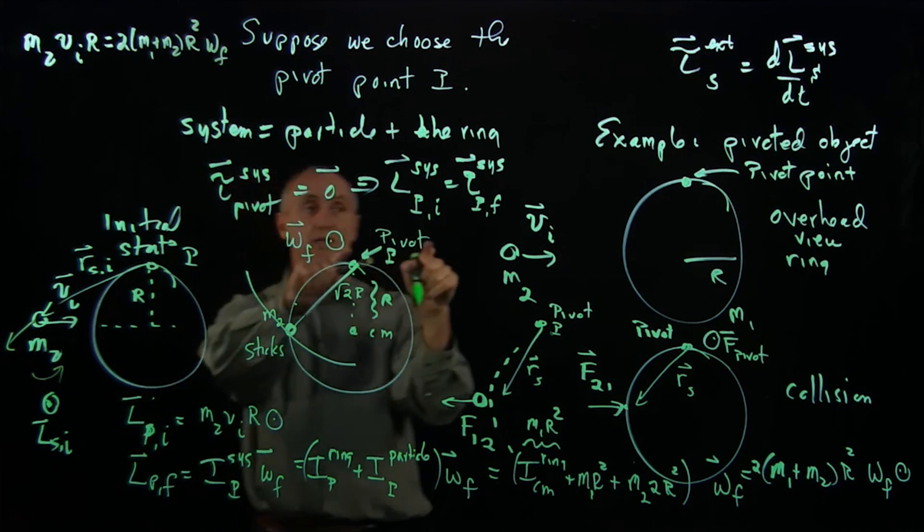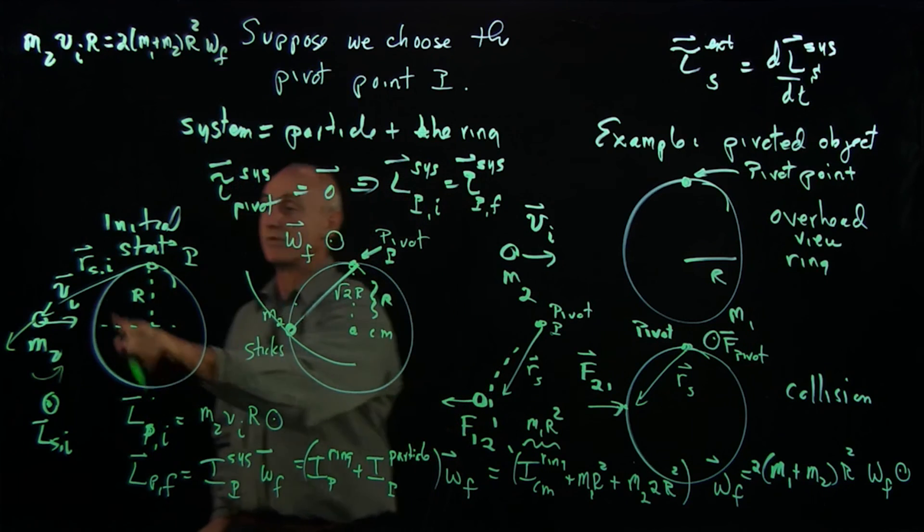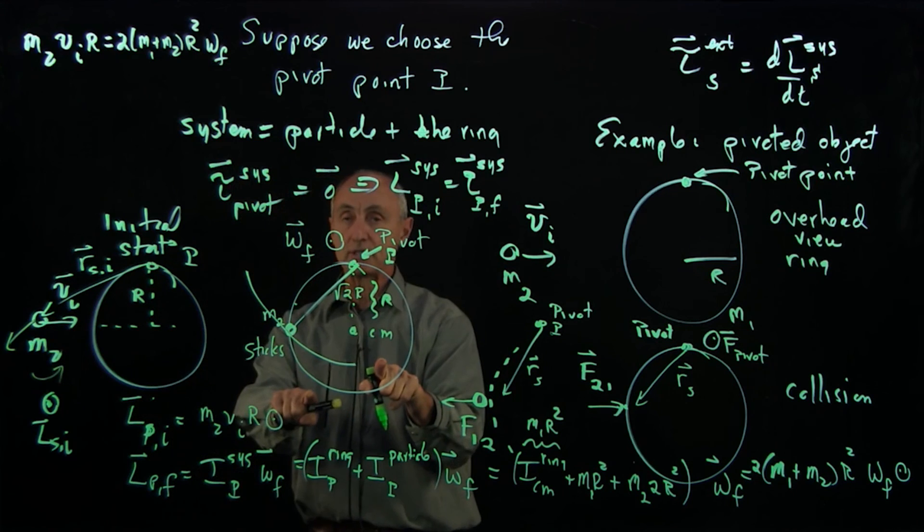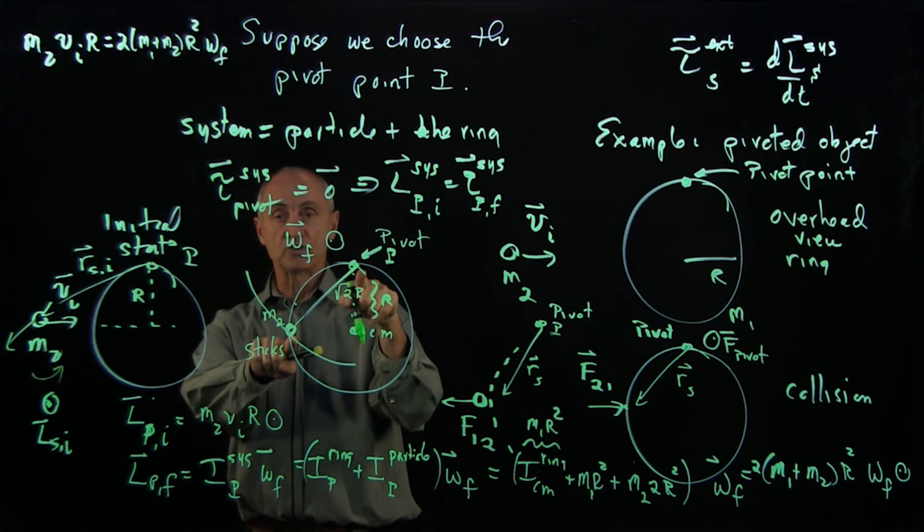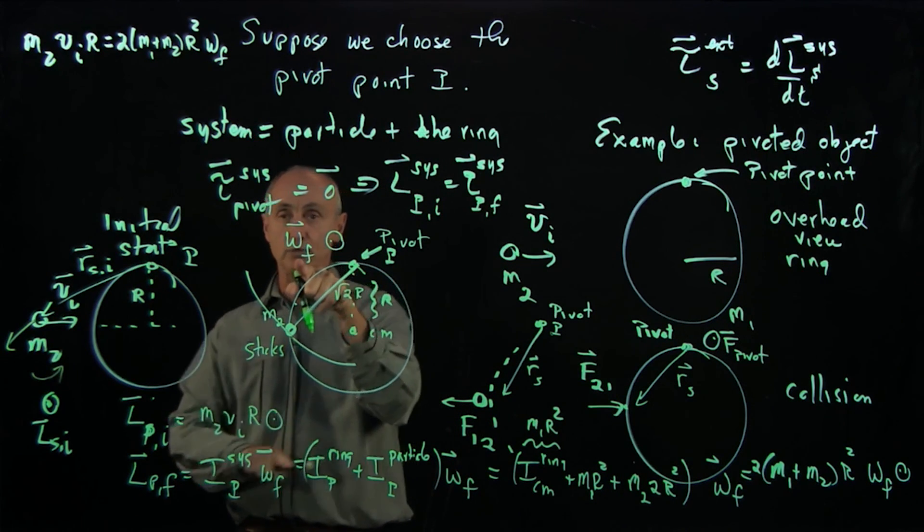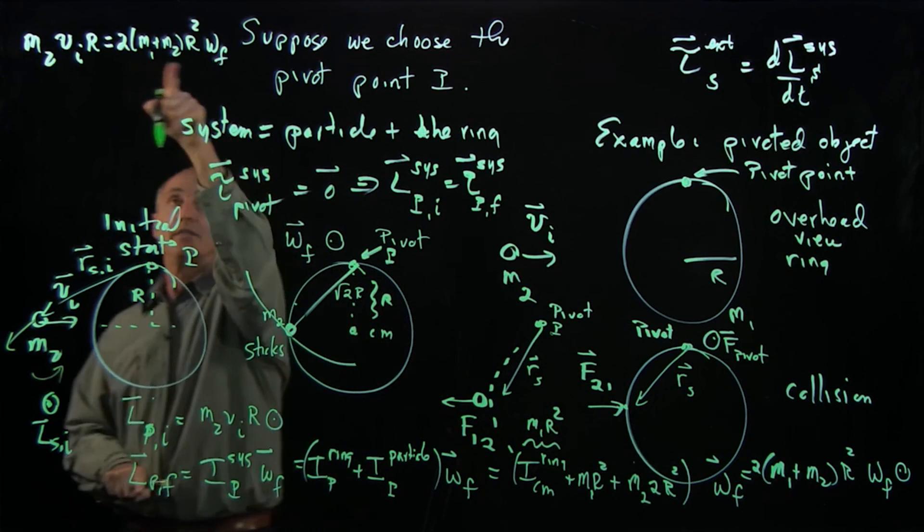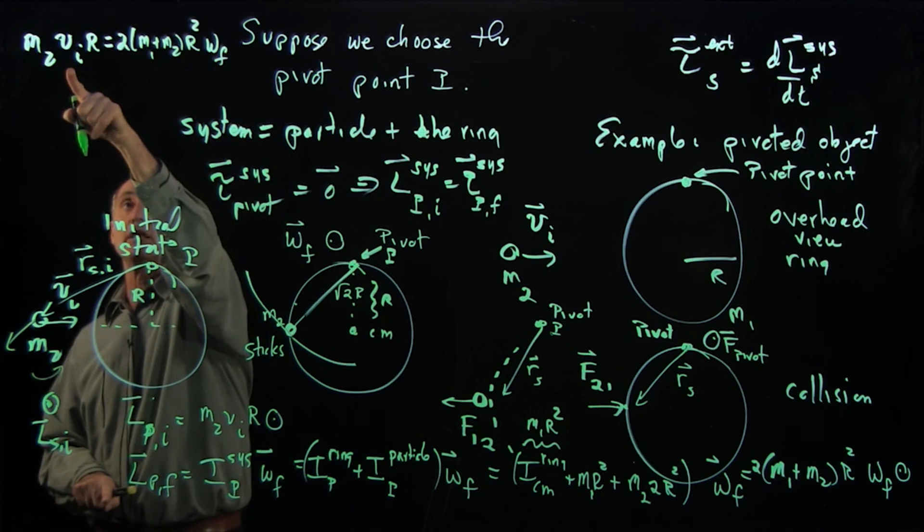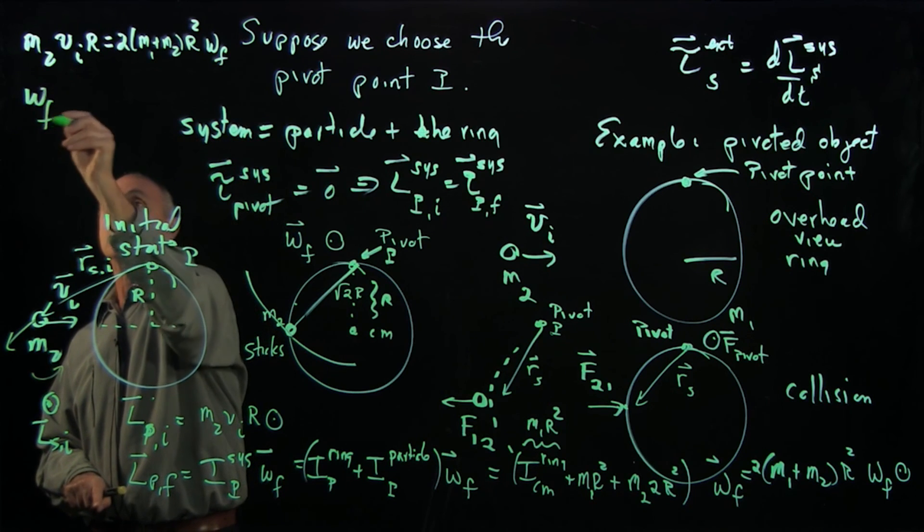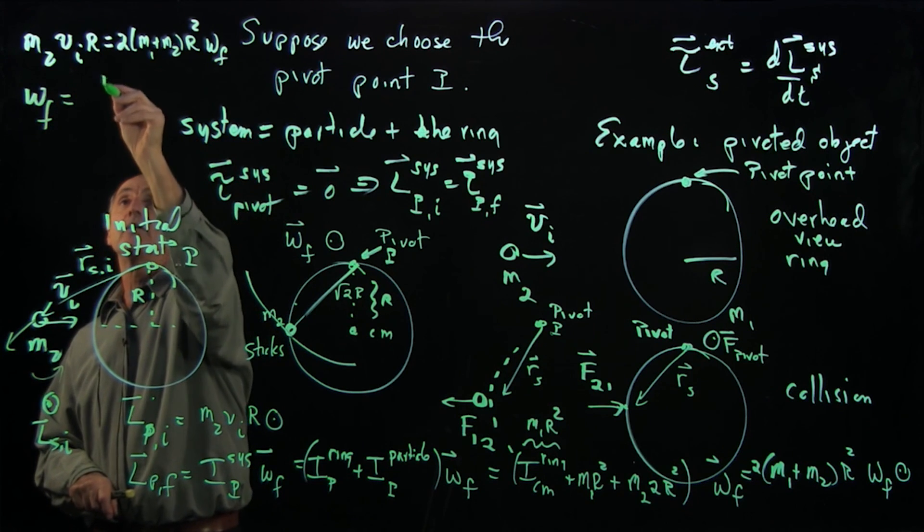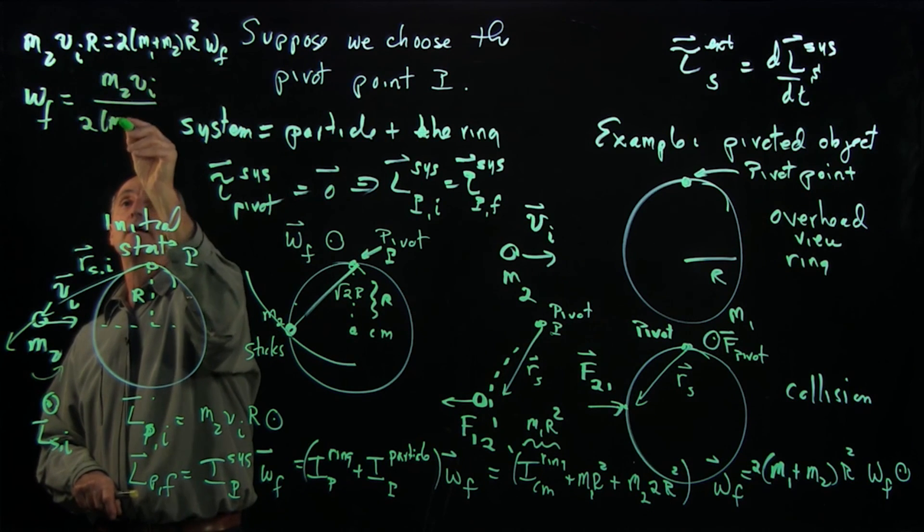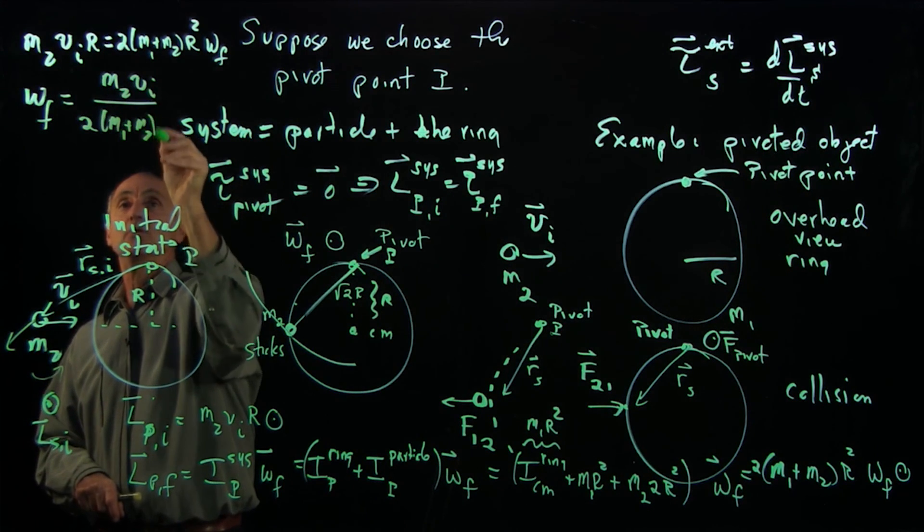And that is a statement that the initial angular momentum of our system, the ring is at rest here, is equal to the final angular momentum of the system, where M2 is stuck to the ring, and they're all rotating about this pivot point, with omega final. That's the angular momentum of the system about P. This is the initial angular momentum. And so I can conclude that omega final is M2VI over 2(M1 plus M2)R.